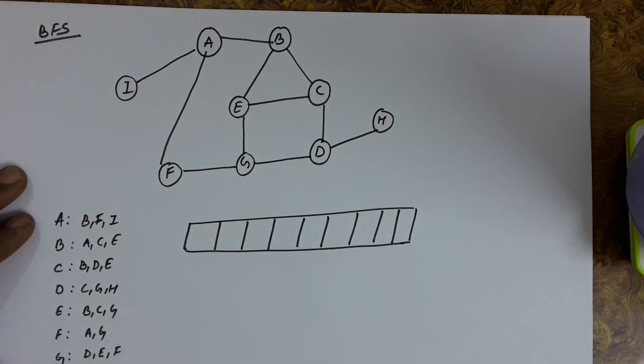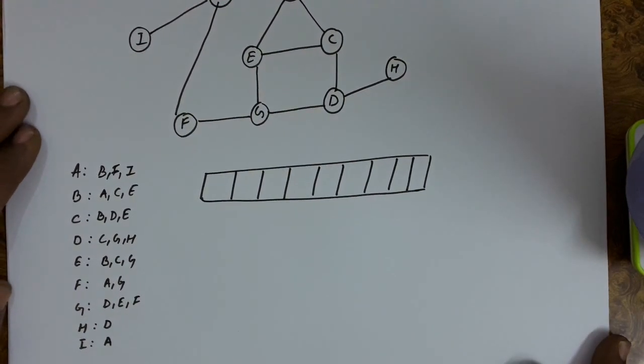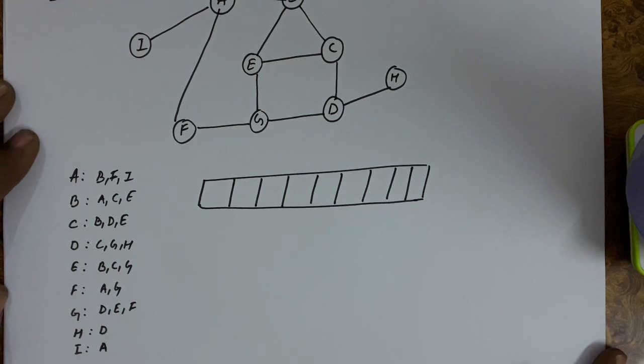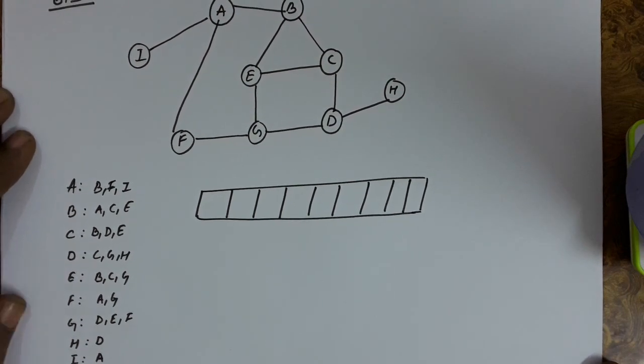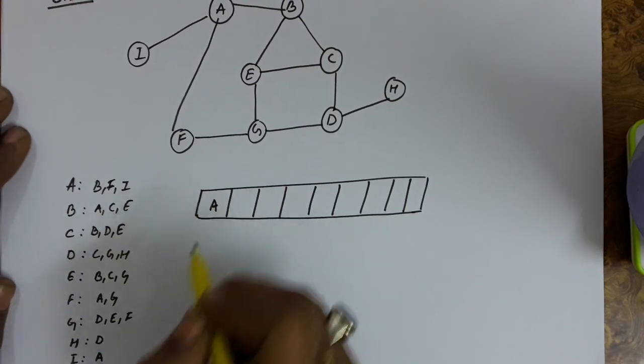Let us take one more example just to endorse this concept of breadth-first search. Let us suppose a graph is given and this is the adjacency list that we have prepared. And we are taking a queue and insert the root vertex in this queue.